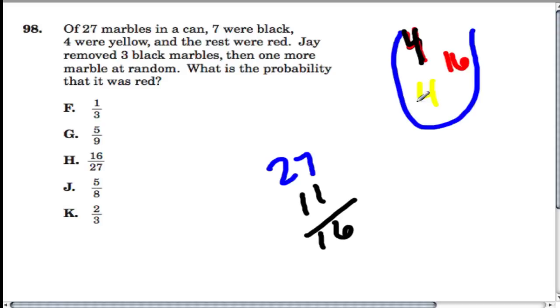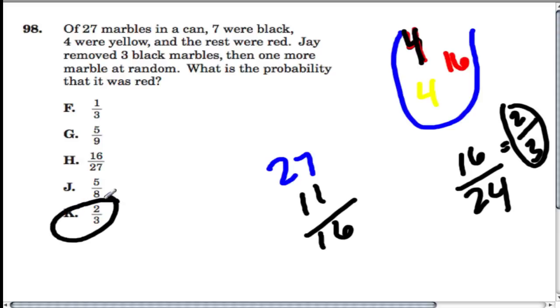If we have 16 red and 8 other marbles still in the bag, that means there are 24 marbles in the bag. What's the probability that it was red? What is 16 out of 24? 8 goes into 16 twice and 24 three times, so there's a two-thirds chance that marble was red.